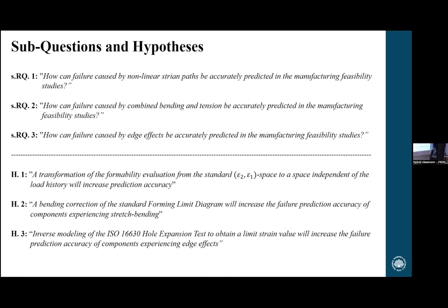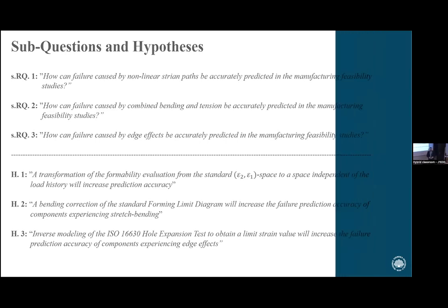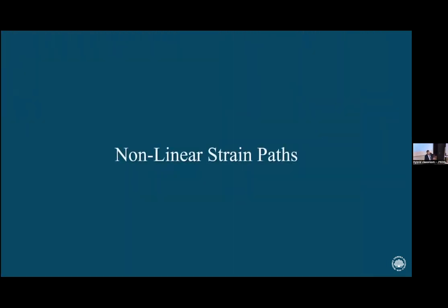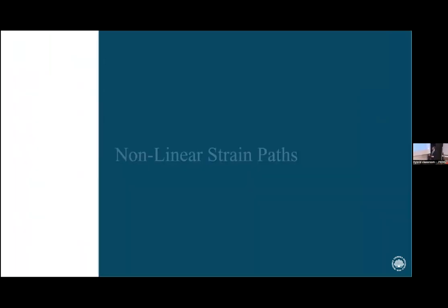Question two: how can failure caused by combined bending tension be accurately predicted, with the hypothesis that a bending correction of the standard forming limit diagram will increase failure prediction accuracy? Question three: how can failure caused by edge effects be accurately predicted, with the hypothesis that the inverse modeling of the ISO 16630 hole expansion test to obtain a limit strain value will increase failure prediction accuracy? These are the three questions and hypotheses I have taken my offset from.